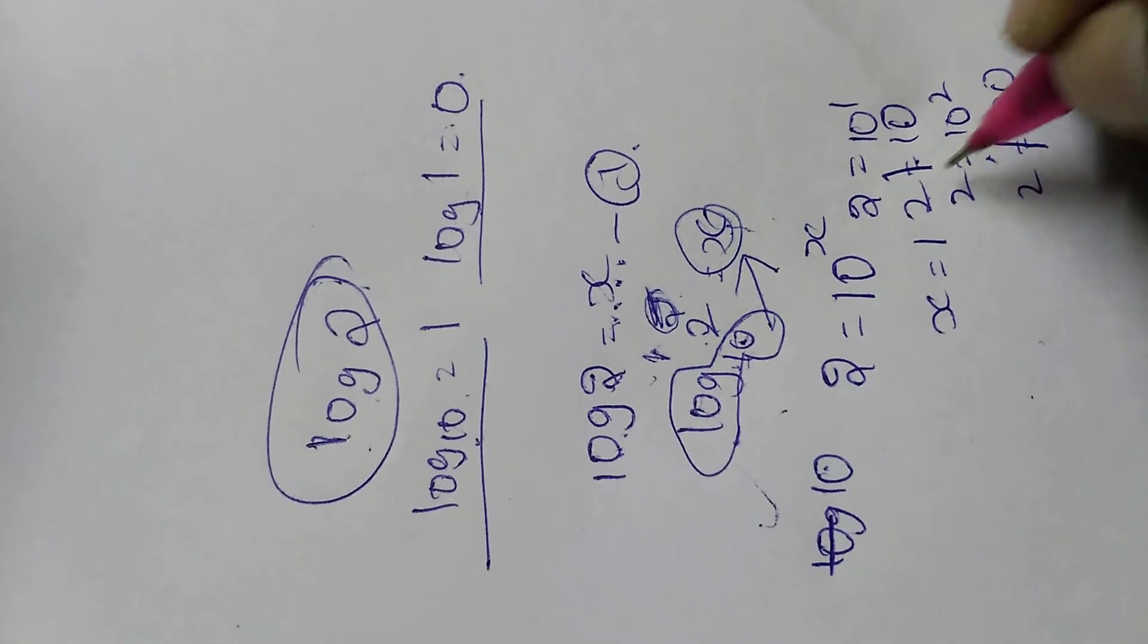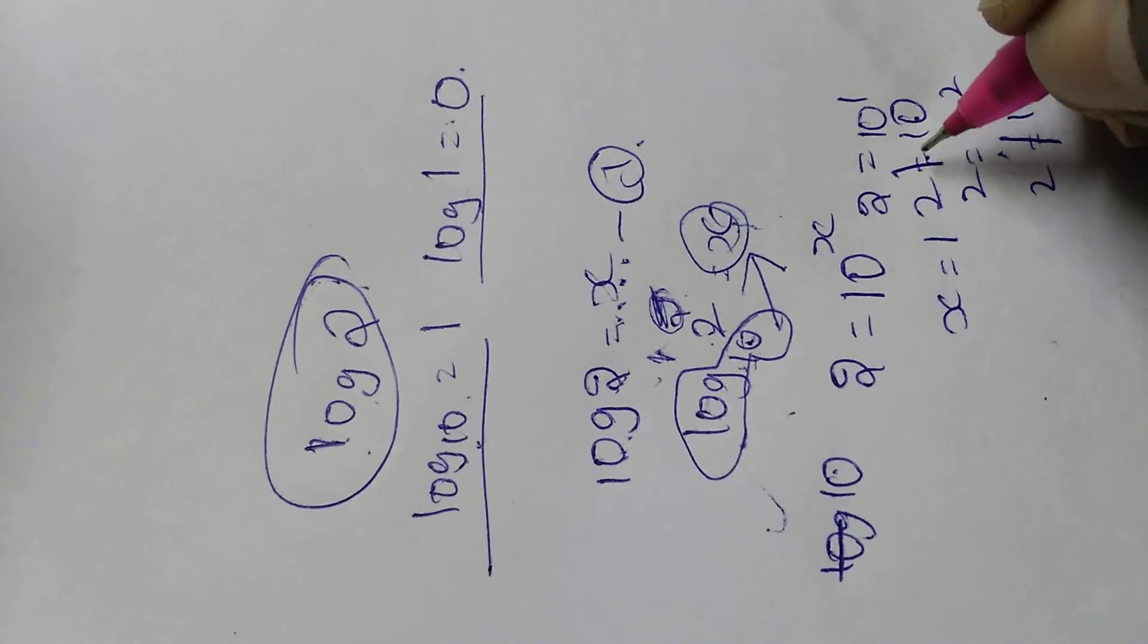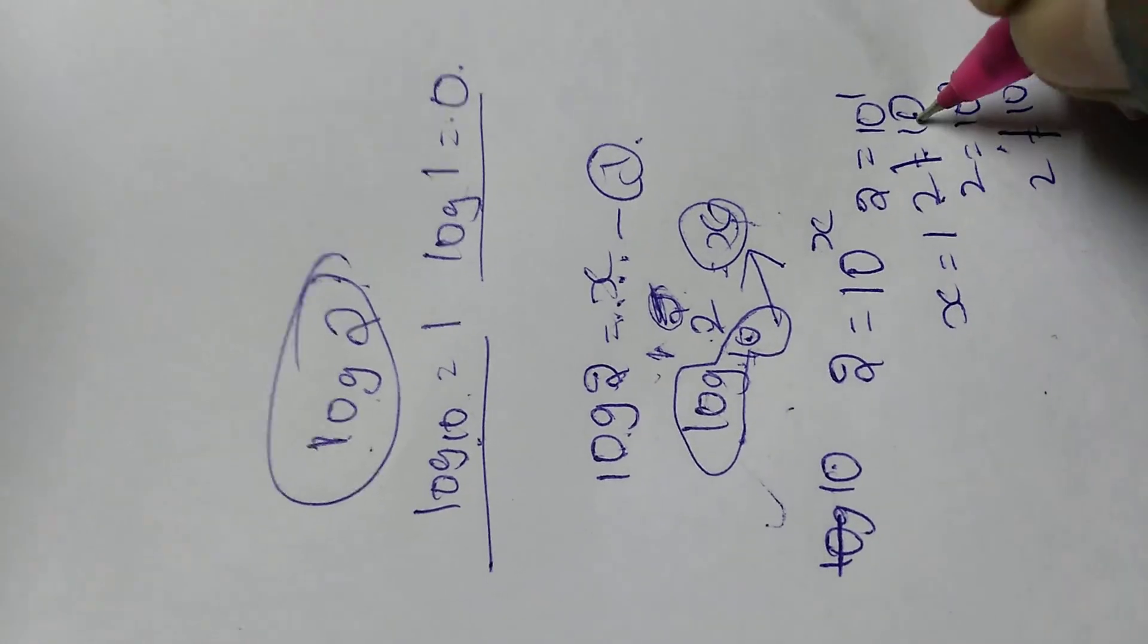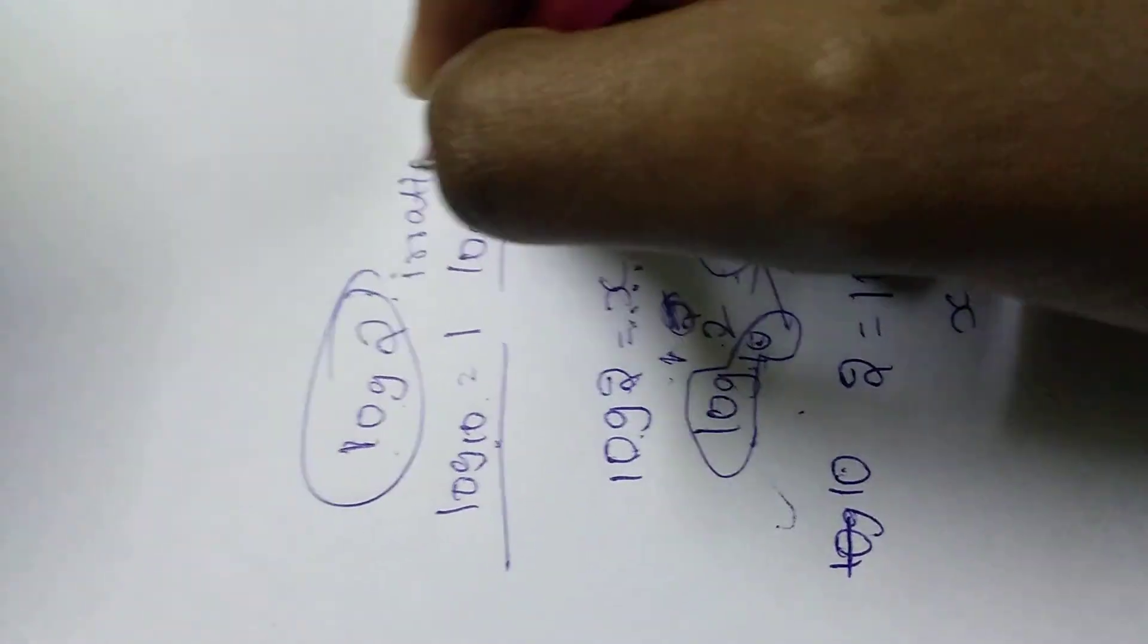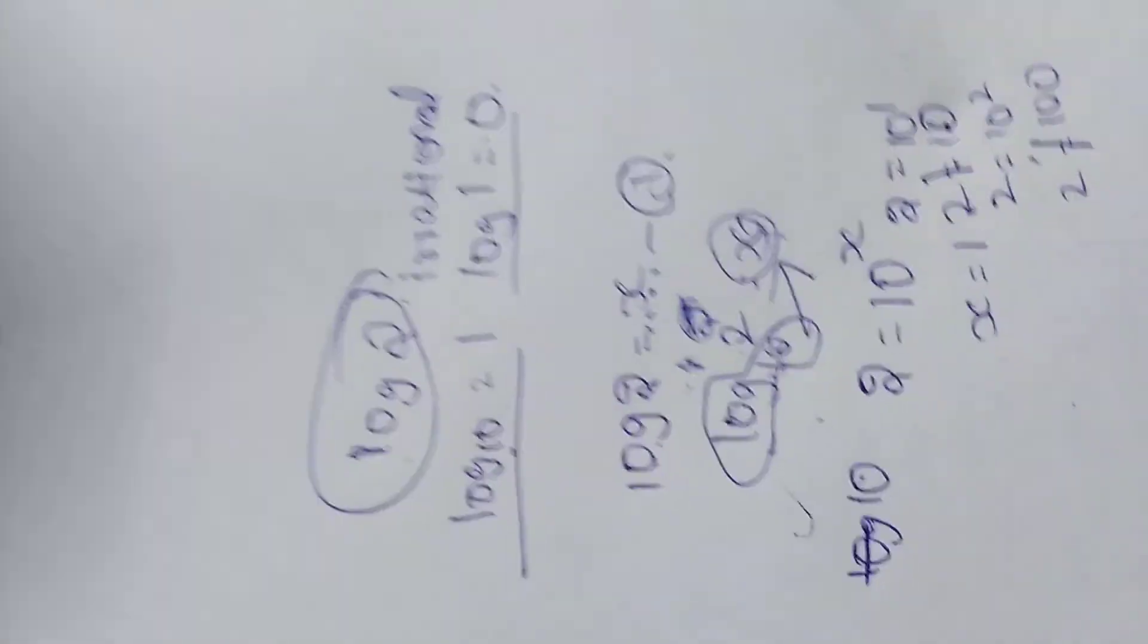So in any of the case, by trial and error method, we are getting that LHS is not equal to RHS. We can confirm that log 2 is an irrational number. If we get equal it is rational, but we are getting unequal so it is irrational.